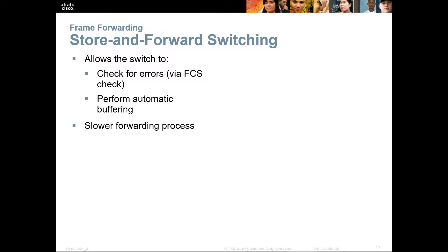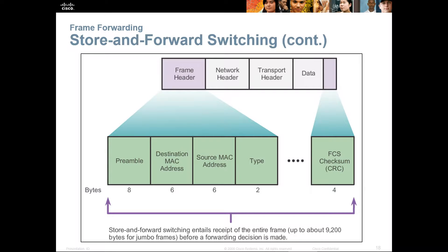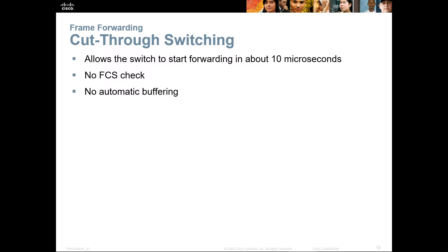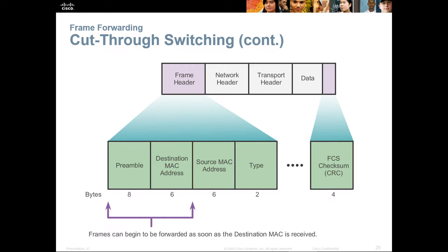Store-and-forward switching again double-checks for errors, performs automatic buffering, and it's slower but there are no errors. It looks at the frame header and calculates the CRC checksum to verify the frame is correct. Cut-through does no error checking and no automatic buffering, but allows the switch to start forwarding in about 10 microseconds — it's very quick. It only looks at the preamble and the destination MAC address, and by the time it reads those, it's already forwarding the frame on with no error checking whatsoever.